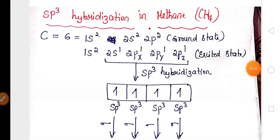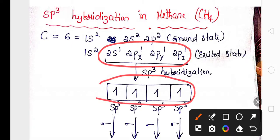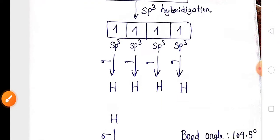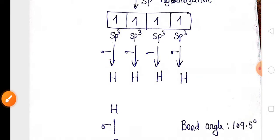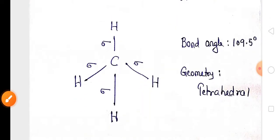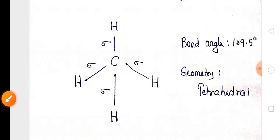For sp3 hybridization in methane (CH4), one s orbital and three p orbitals undergo hybridization to produce four sp3 hybrid orbitals. Each sp3 hybrid orbital axially overlaps with the s orbital of hydrogen to form a sigma bond. Around one carbon there are four hydrogen atoms with sigma bonds. The bond angle is 109.5° and the geometry is tetrahedral.